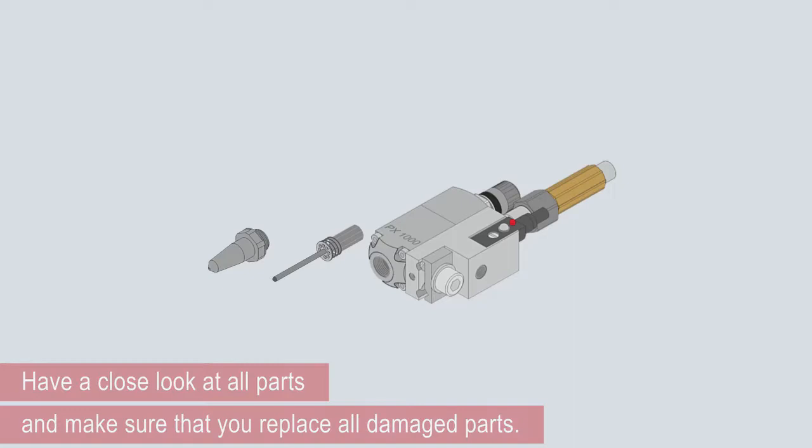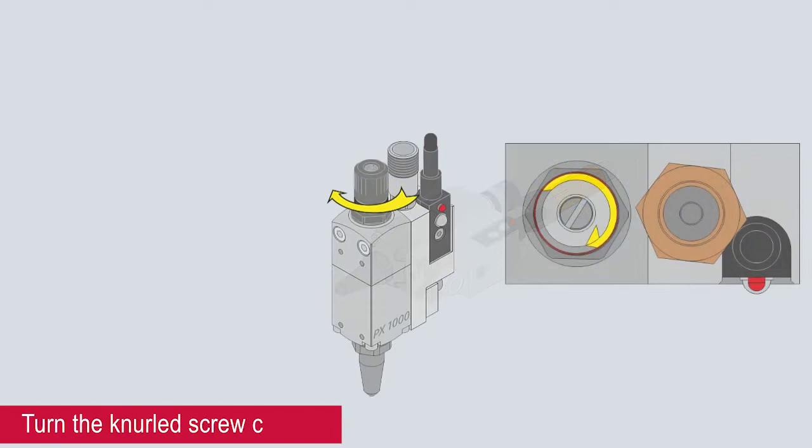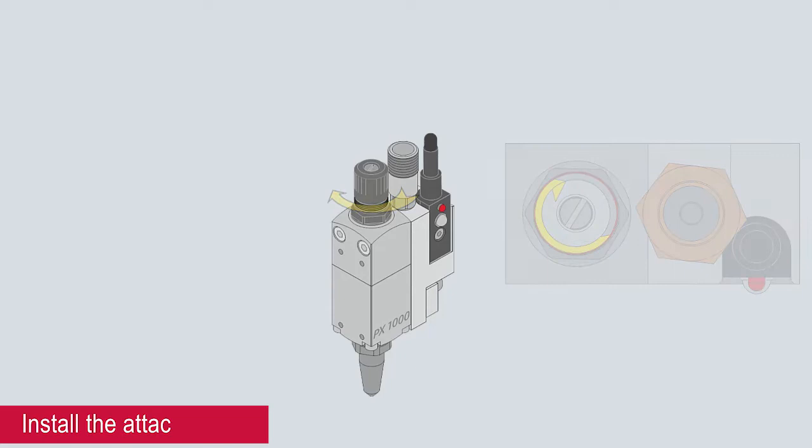Insert the armature and screw the nozzle in. Turn the knurled screw clockwise until it stops. Install the attachments, cable, and hose.